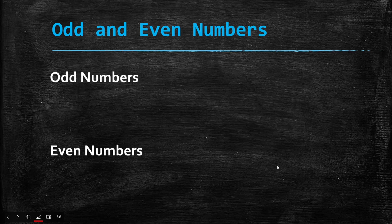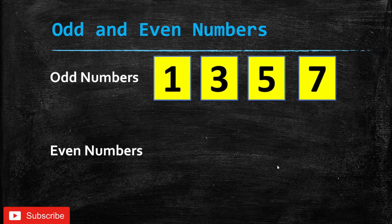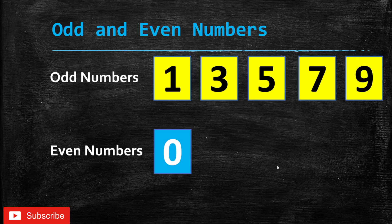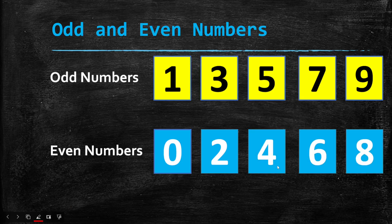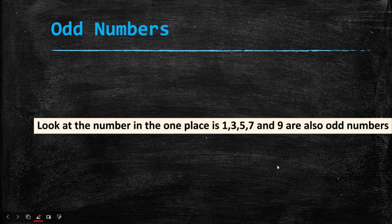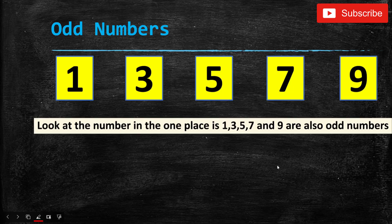For the odd numbers, it is 1, 3, 5, 7, and 9. And for the even numbers, it is 0, 2, 4, 6, and 8. These are the numbers for odd and even. If you guys memorize this very well, you can find out if a number is odd or even. Let's memorize odd numbers once again: 1, 3, 5, 7, and 9.